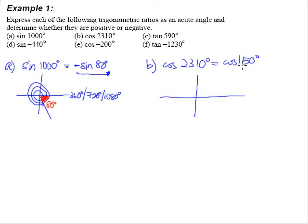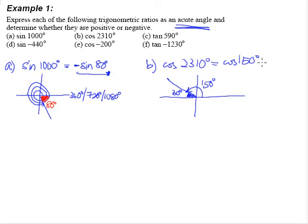But 150 degrees is not an acute angle, and the question wants an acute angle. 150 degrees sits in the second quadrant, and the basic acute angle we're most interested in is 30 degrees. So cosine 150 degrees equals cosine 30 degrees.